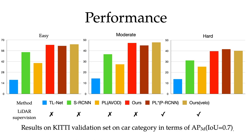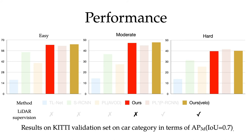Experiments on the KITTI dataset show that even when LiDAR ground truth is not available at training time, DisparCNN achieves competitive performance and outperforms previous state-of-the-art methods by 20% in terms of average precision. We have open-sourced our work on GitHub — welcome to check it out.